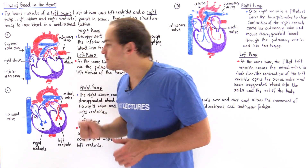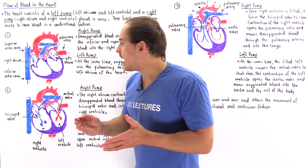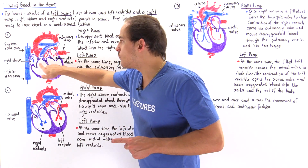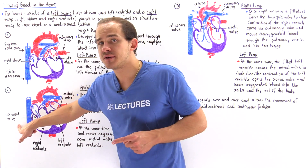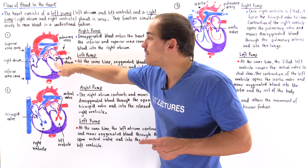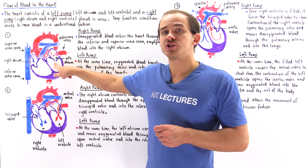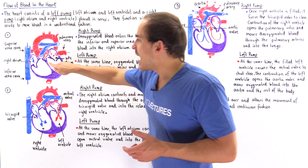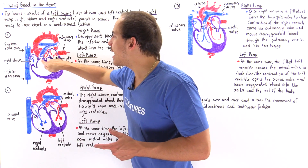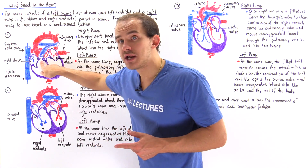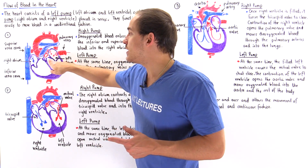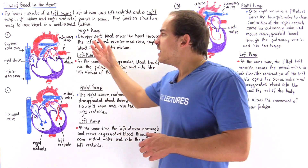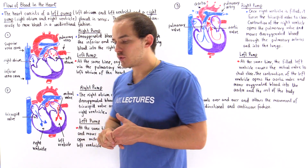We also have four different types of valves: the right atrioventricular valve (tricuspid valve), the left atrioventricular valve also known as the mitral or bicuspid valve, and two semi-lunar valves — the pulmonary semi-lunar valve and the aortic semi-lunar valve.